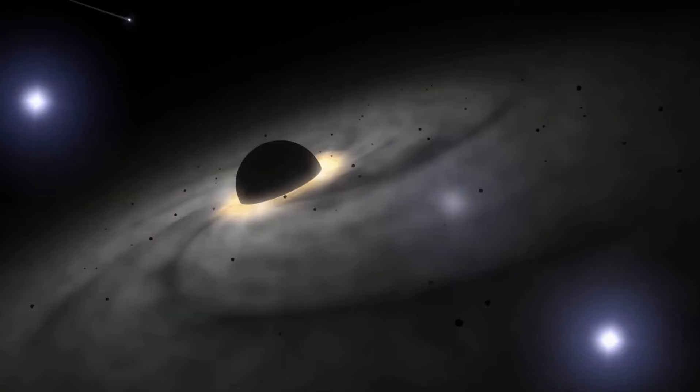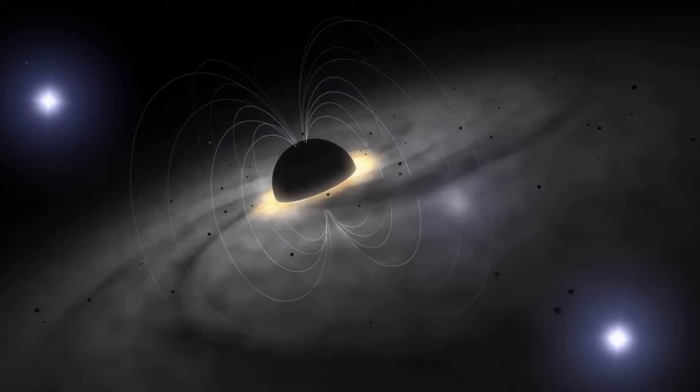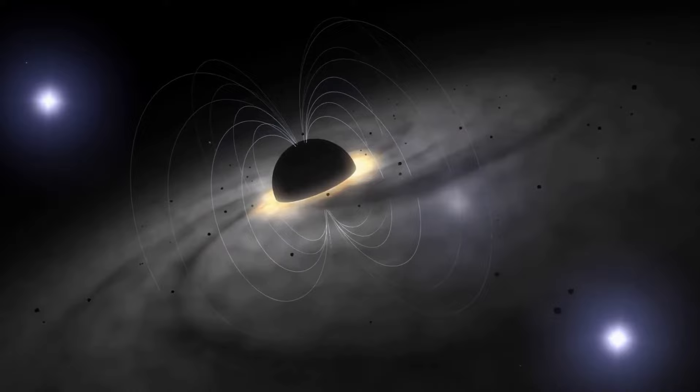This can ultimately cause that background object to appear amplified from our vantage point. The concept is called gravitational lensing, as the intervening object acts as a natural cosmic magnifying glass.